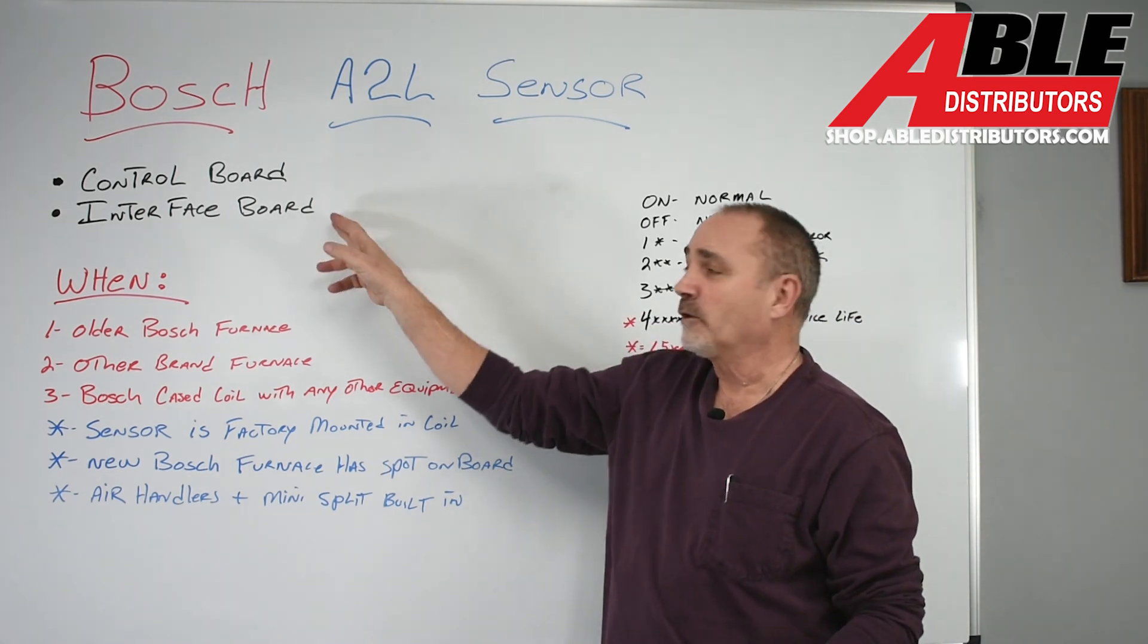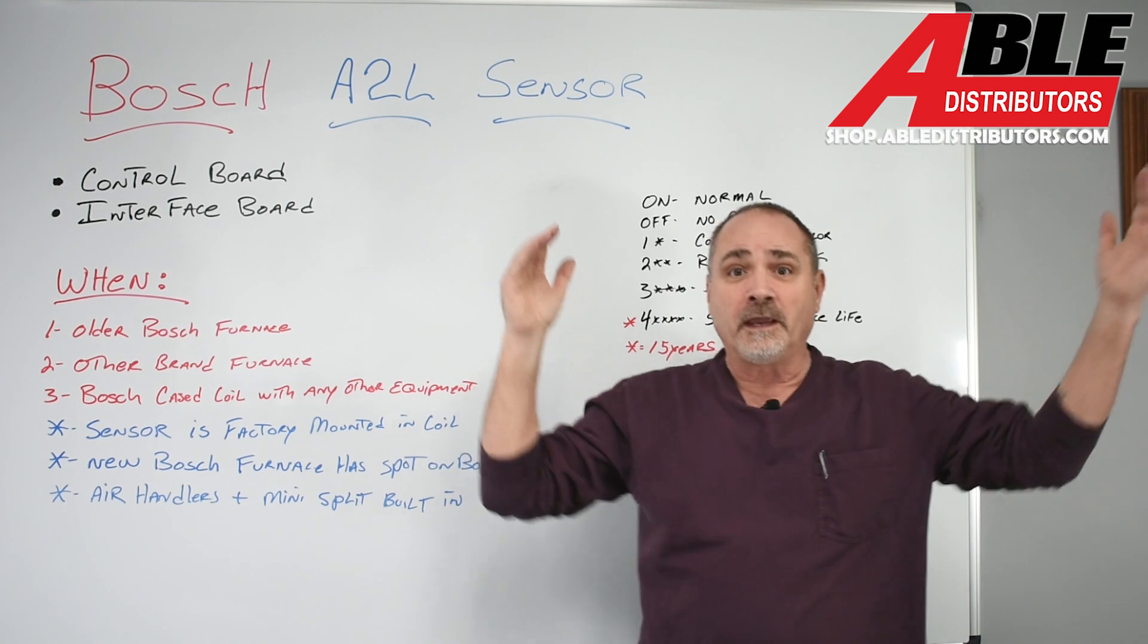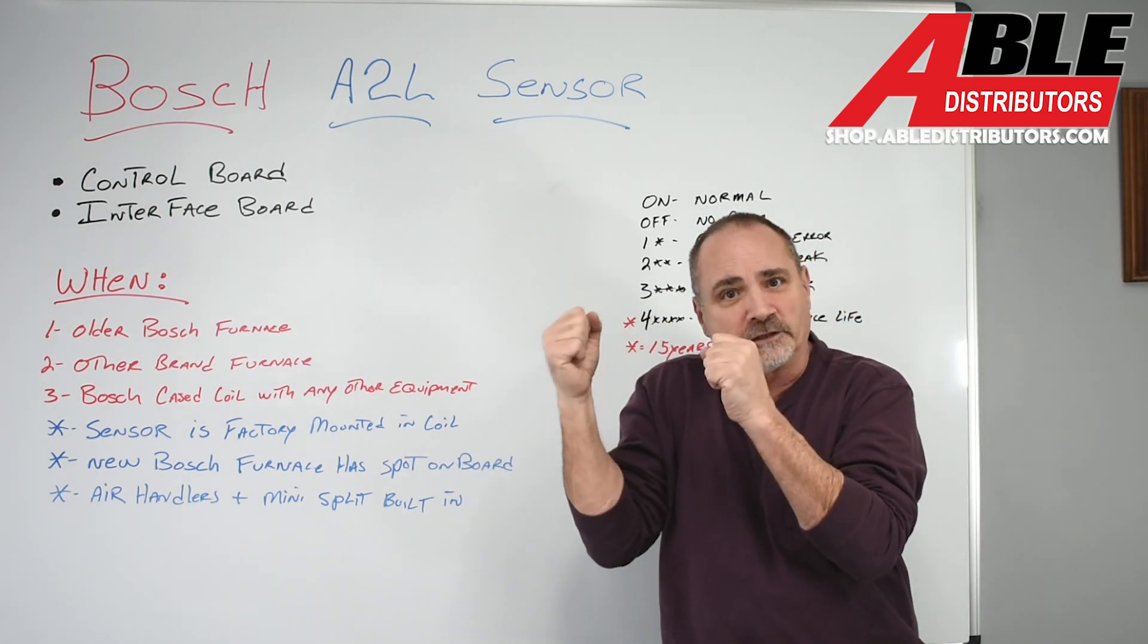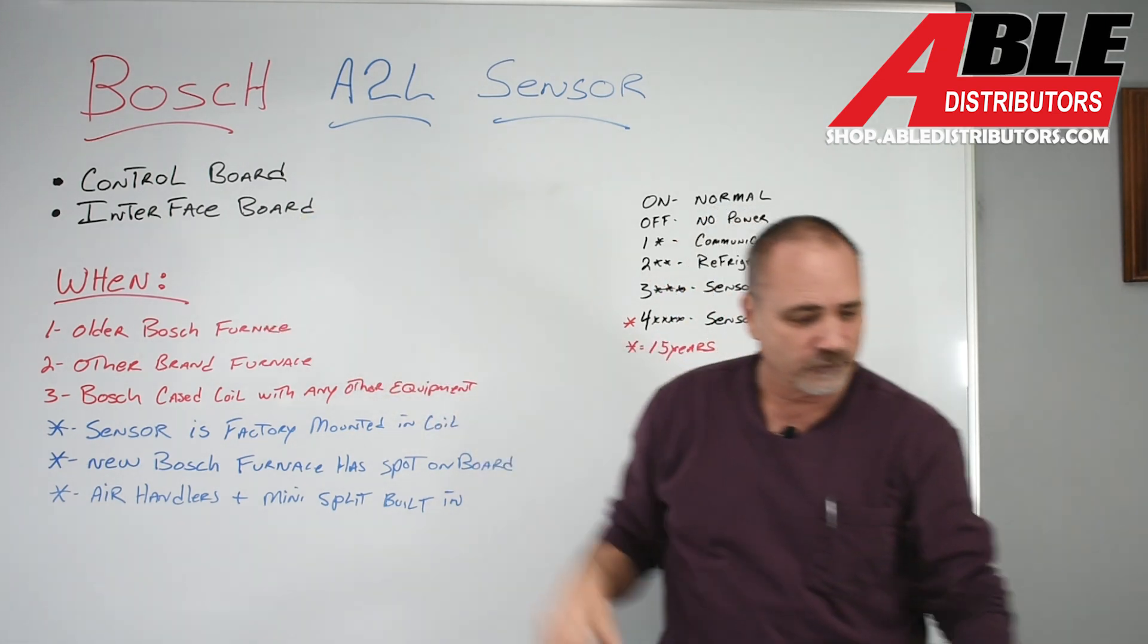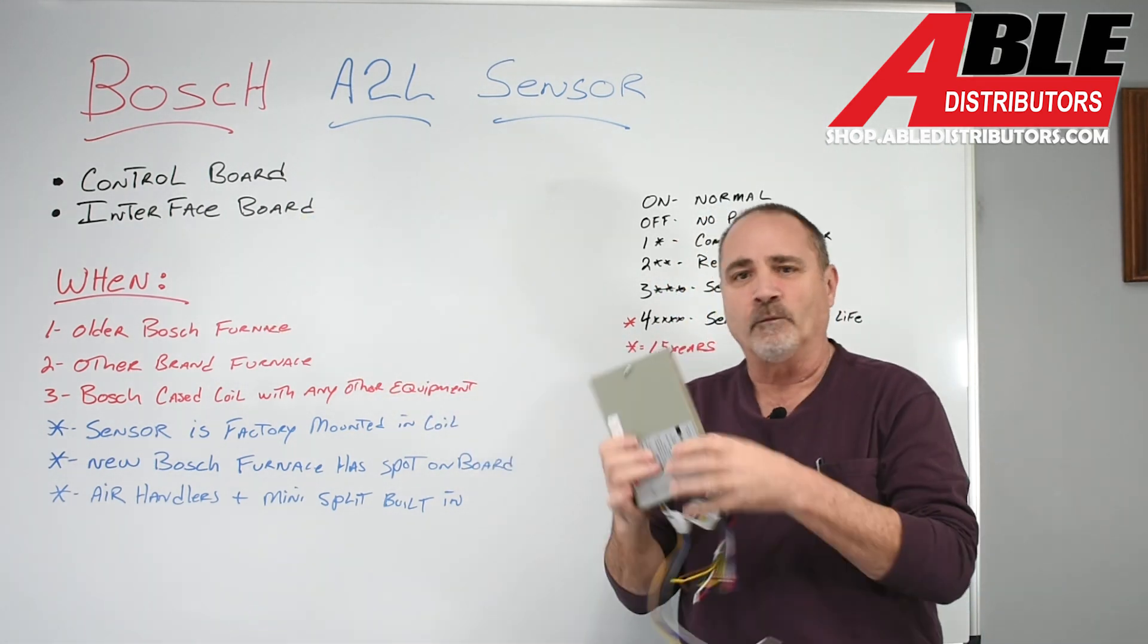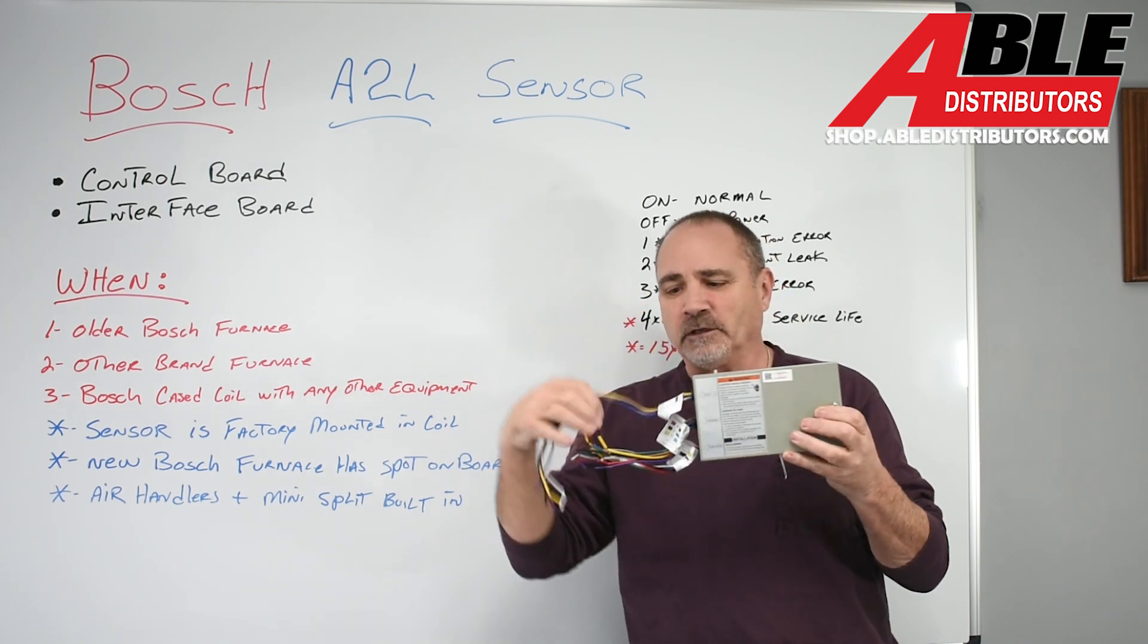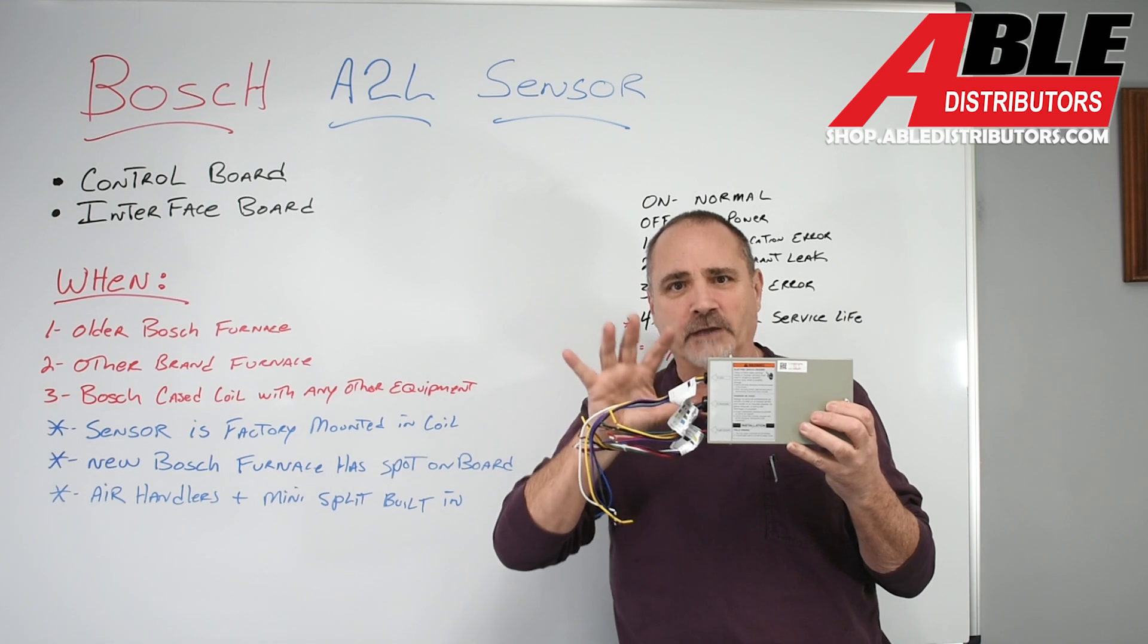They call it a control board. I'm going to call it an interface board because it goes between the piece of equipment and the A-coil. So to me, it makes more sense to be an interface. It lets those two pieces communicate. When are you going to need this control board? And this is what it looks like, by the way. And we're going to dive inside in just a minute. But that's what it looks like. Yes, it's a little scary looking. Don't worry. We got your back. We got you covered.